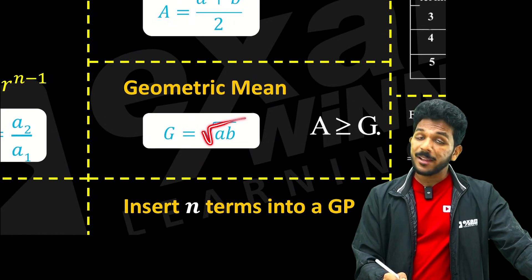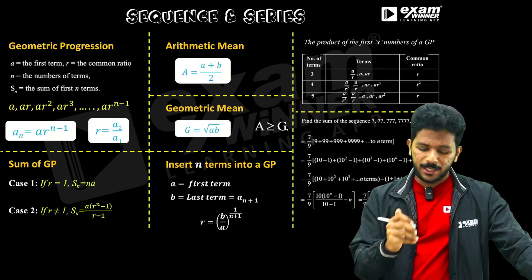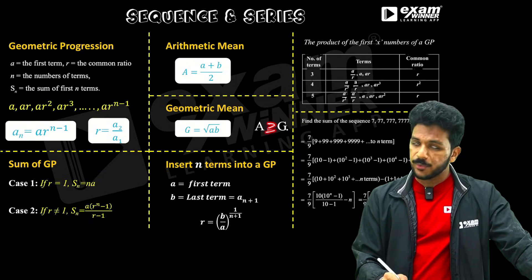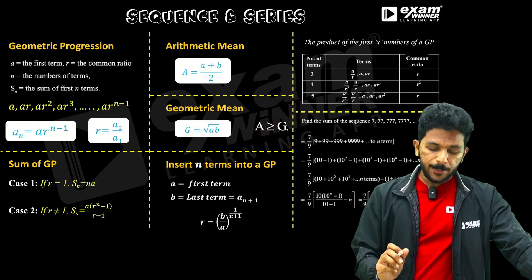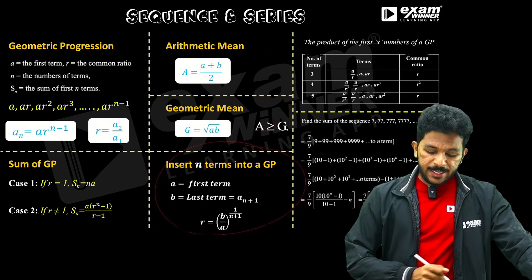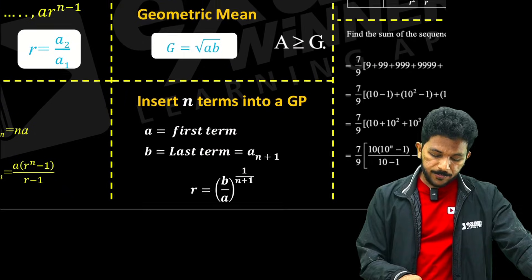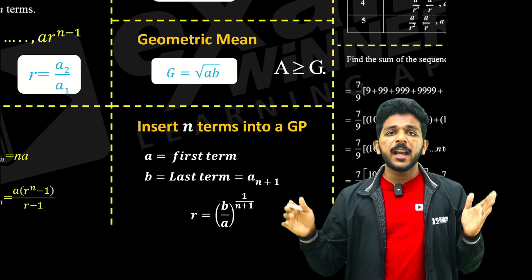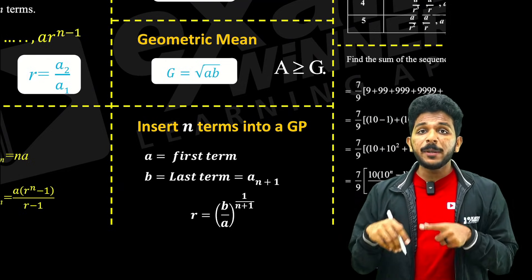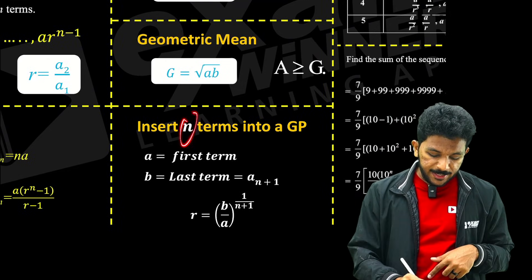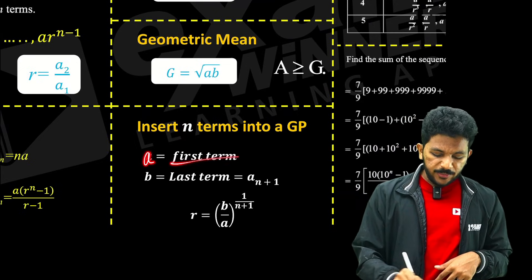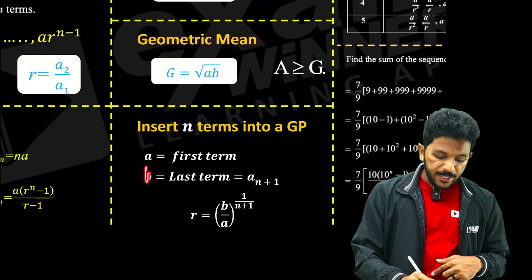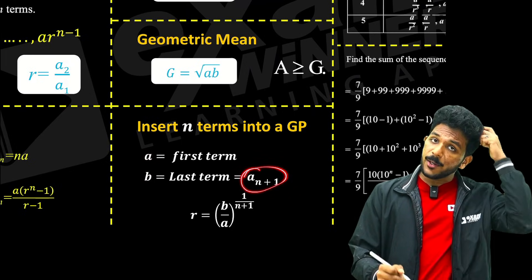Geometric mean will be plus or minus, so the root gives two answers. Arithmetic mean is greater than or equal to Geometric mean. To insert N numbers into a GP with two given numbers — for example one is 256 — we have N terms with first term A and last term B, giving N plus 1 terms in total.